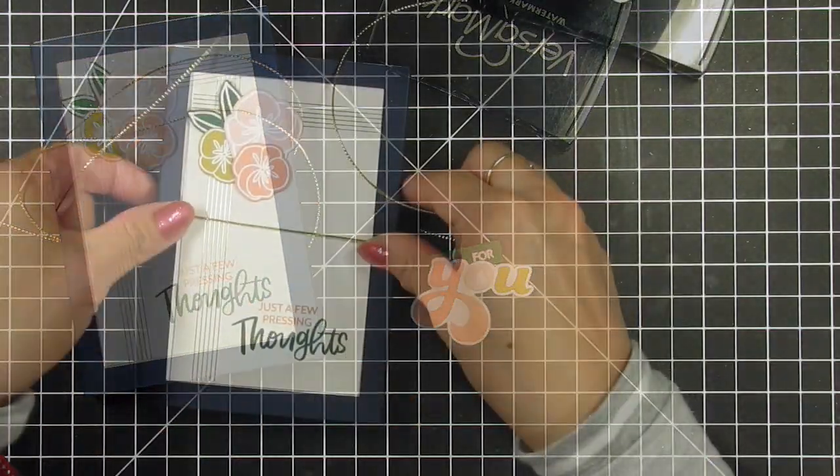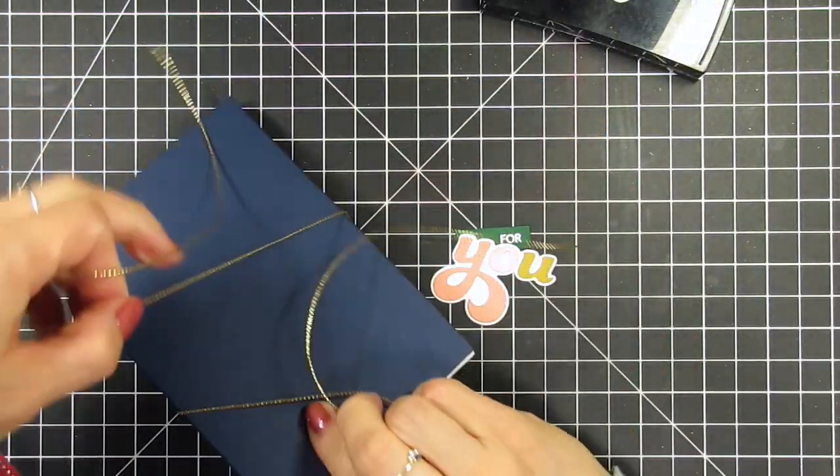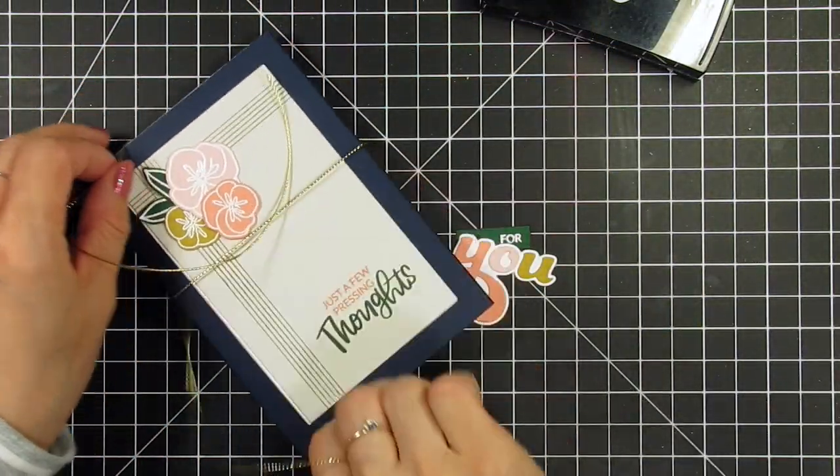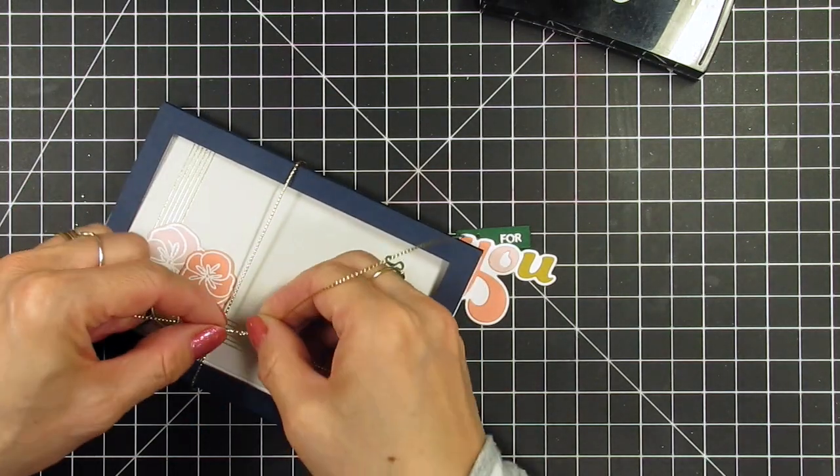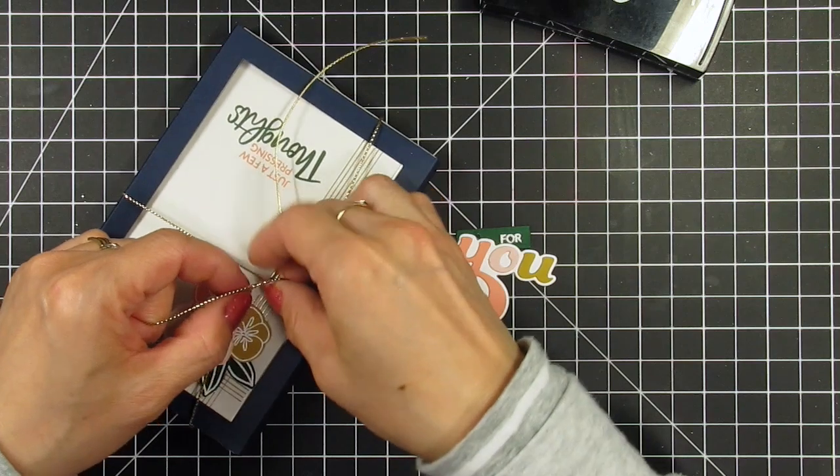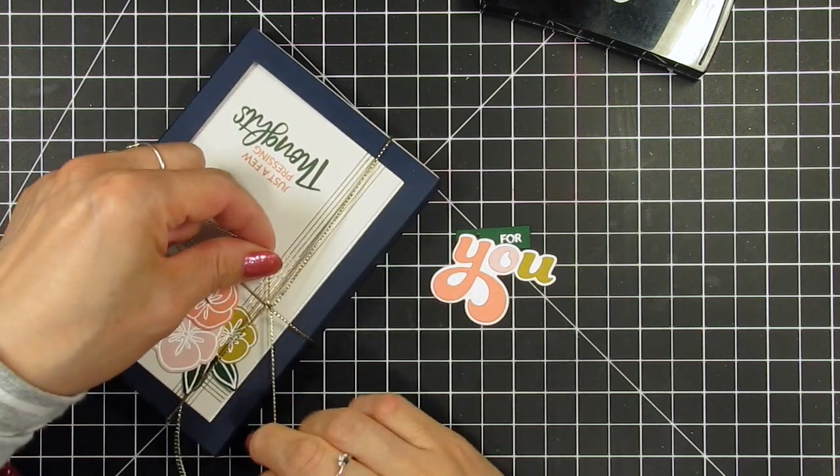To gift wrap my shadow box card set I wrap the gold cord from front to back then twist it in the opposite direction at the back. I bring it back to the front where it meets the cord. I loop one strand underneath and tie a knot so both pieces are secure and won't slide back and forth.